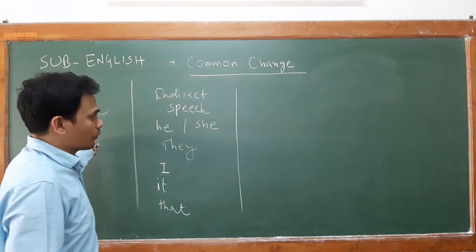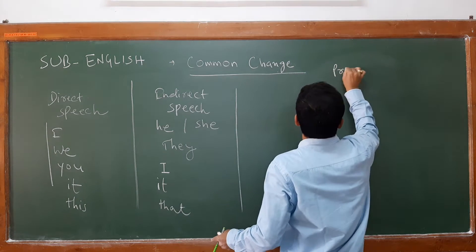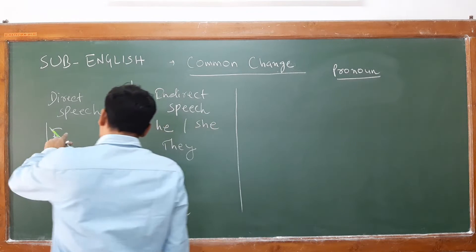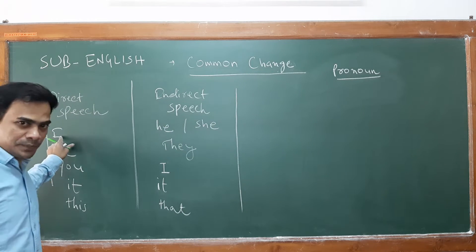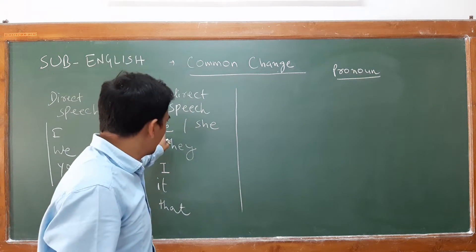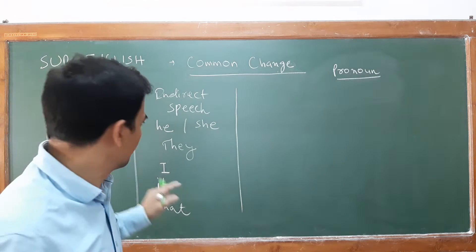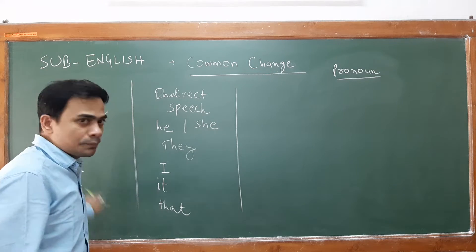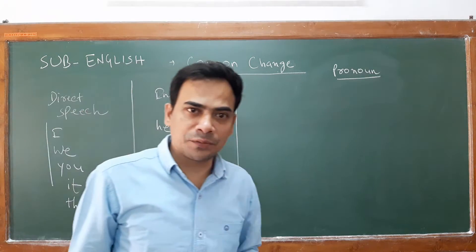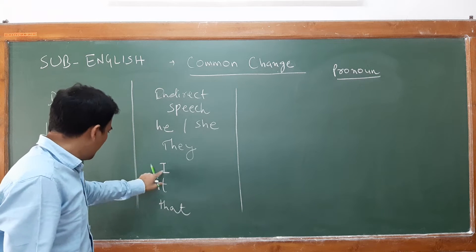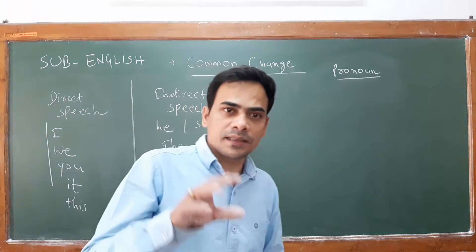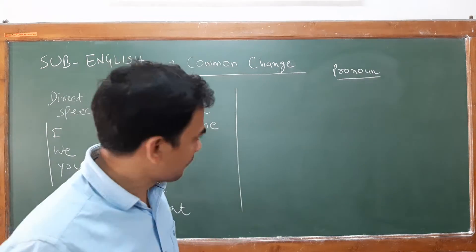These are the lists of pronouns. If you find in your direct speech the first person pronoun 'I', then it will change either into 'he' or 'she'. If you see 'we' in your direct speech, then it will directly change into 'they'. 'You' will become 'I', 'it' will become 'it', and 'this' will become 'that'. So these are the basic changes of your pronouns.